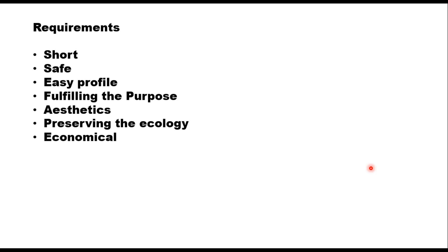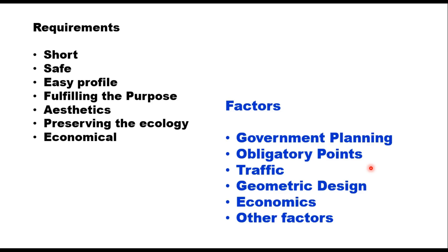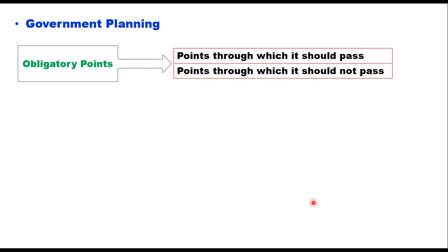There are several factors which can dictate the alignment of a road. These include government planning, obligatory points, traffic, geometric design, economics, and other factors. A road project involves heavy investment and therefore it should comply with government requirements and planning.